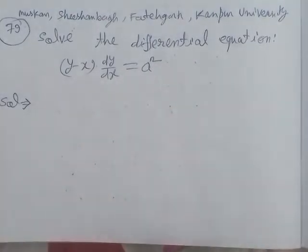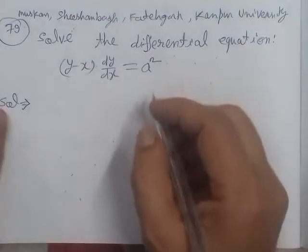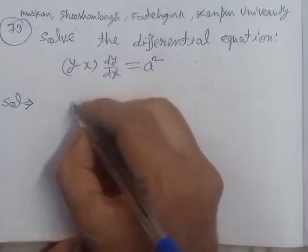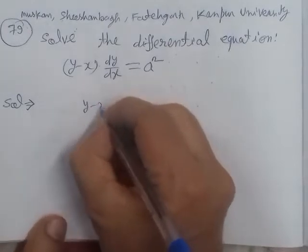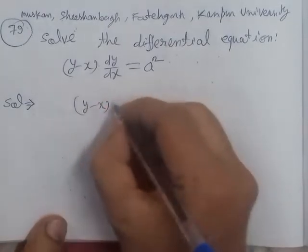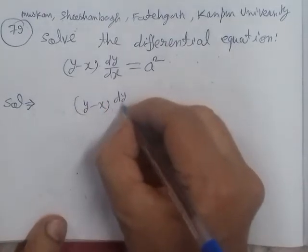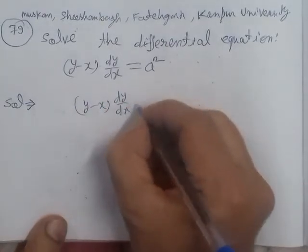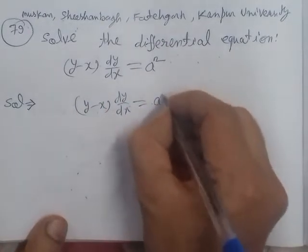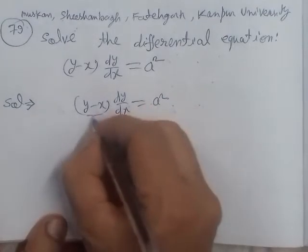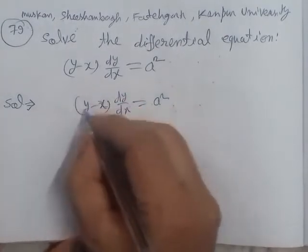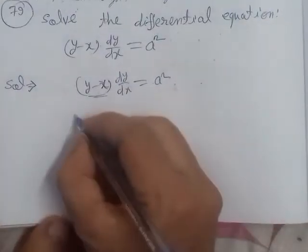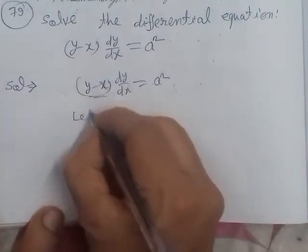Using the shortcut method, we have the differential equation y minus x dy/dx equal to a square. So we can use the substitution with these two variables: let v equal to y minus x.